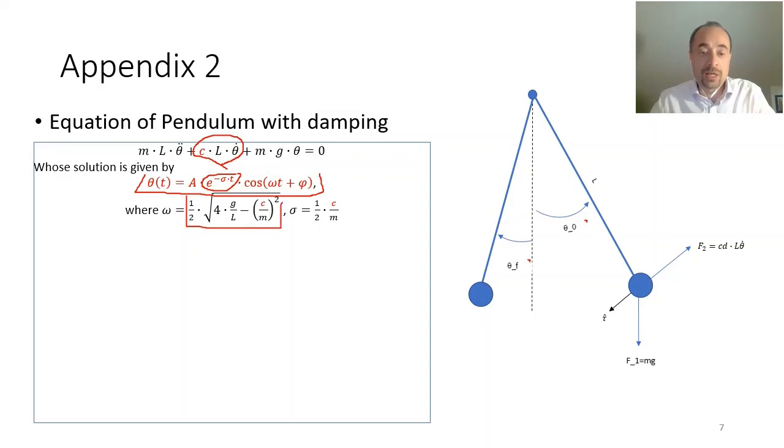which in case of C zero is the same as before, square root of g divided by L. Otherwise it includes this factor, which is a negative factor. It means the frequency because of the attenuation is slower. And the function which describes the attenuation is e to the minus sigma times t. And sigma is the damping factor divided by m and divided by two. So the bigger is the mass, the smaller is the attenuation.